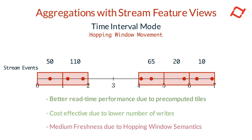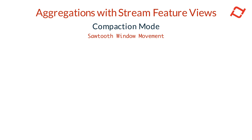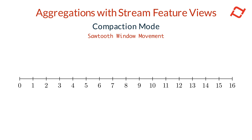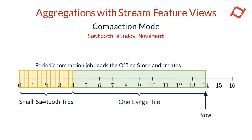To combine the freshness benefits of a sliding window with the performance efficiency of a hopping window, you can enable compaction on your stream feature views, creating a hybrid approach using sawtooth window movement. As with batch feature views, when compaction is enabled, Tekton runs periodic compaction jobs that aggregate data from the offline store into compacted tiles stored in the online store. However, unlike batch feature views, stream feature views create both a large tile and a small number of sawtooth tiles at the trailing edge — the oldest part of the window.